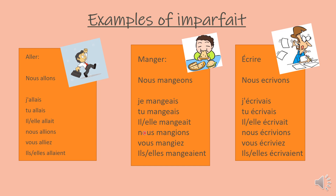Je mangeais, tu mangeais, il ou elle mangeait, nous mangions, vous mangiez, ils ou elles mangeaient. With écrire, the nous form is nous écrivons, so the stem is écriv- after removing -ONS. Then it would be j'écrivais, tu écrivais, il ou elle écrivait, nous écrivions, vous écriviez, ils ou elles écrivaient.